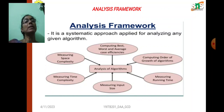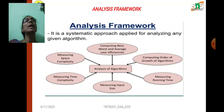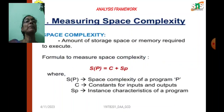In this analysis framework we consider several characteristics: measuring space and time complexity, computing best, worst, and average case efficiencies, the order of growth of algorithms, and the measuring of running time and input size. Based on these factors, every algorithm is analyzed and its performance is calculated. The four main categories of the analysis framework include time and space complexity as the most important efficiency measures.